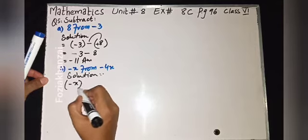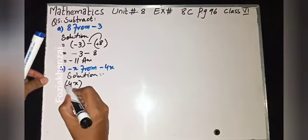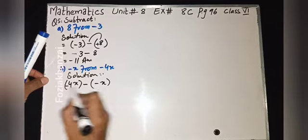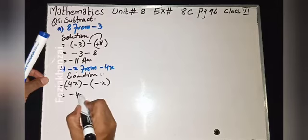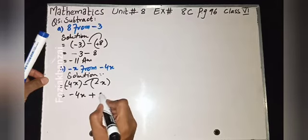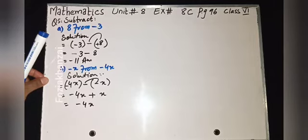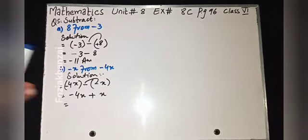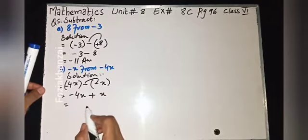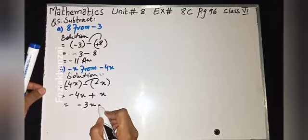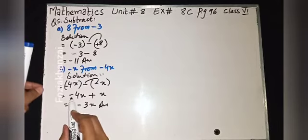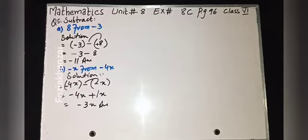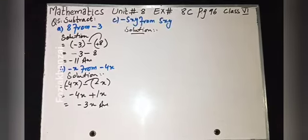Part b: subtract minus x from minus 4x. After 'from', copy first: minus 4x. Then minus bracket minus x. Remove the round bracket: minus 4x minus minus gives plus x. Minus 4x plus x: same variable, minus four minus one gives minus three. So minus 3x is the answer for part b.